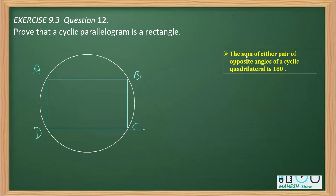We have to prove this is a rectangle. So the given part is: ABCD is a cyclic parallelogram. That is what you will write in the given part, and to prove that it is a rectangle.